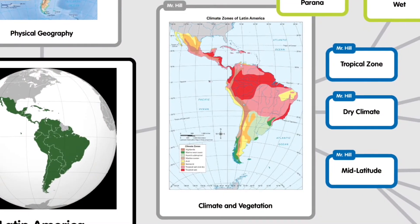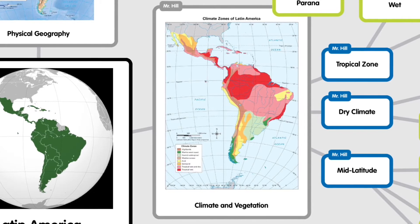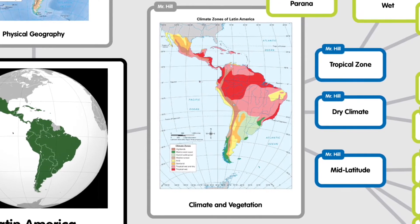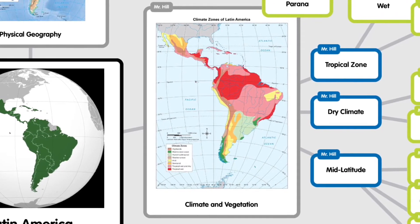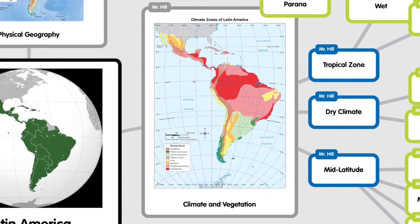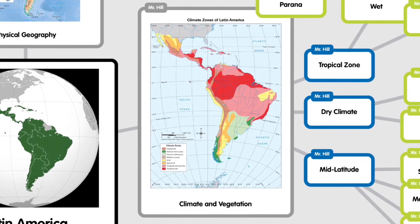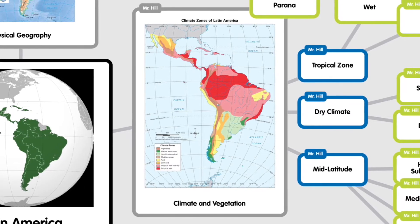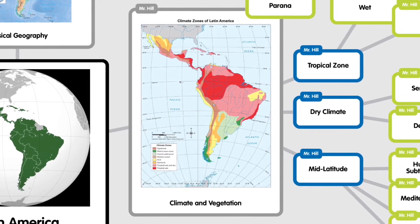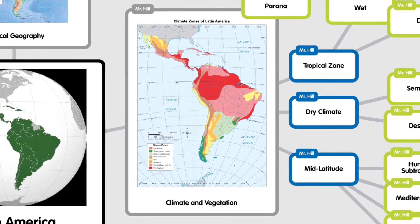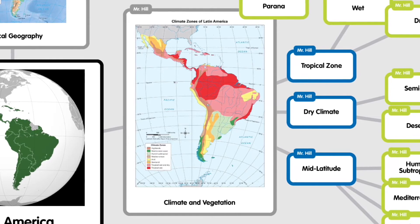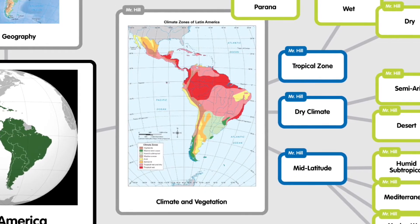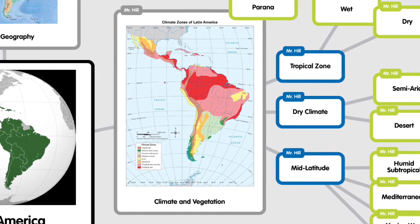Now we're looking at the climate and vegetation of Latin America. The climate and vegetation of Latin America is very varied — it goes from hot and humid in the Amazon basin to the dry desert of Mexico and Chile. You've got some wide ranges and variances of climate, divided up into different zones.